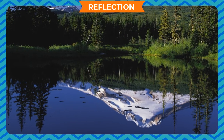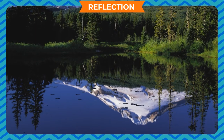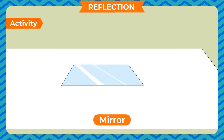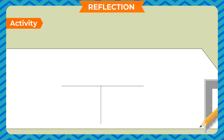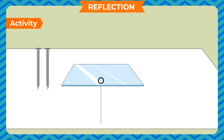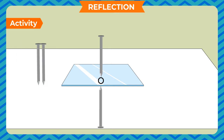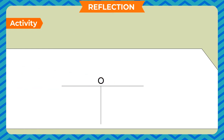Before studying the laws, let us understand the process of reflection. Place a plain mirror on a drawing sheet and mark its edge with a pencil. Remove the mirror and with the help of a set square, draw a perpendicular from a point O on the line of the mirror. Place the mirror back on the line. Take two pins and place them in front of the mirror on one side of the perpendicular, one behind the other. Observe the image of pins from the other side of the perpendicular line. Fix two more pins on the line of the image of the pins you had fixed earlier. Remove the mirror and the pins and join the lines of the pins on both sides of the perpendicular with a pencil and scale.